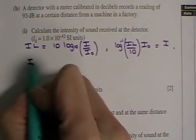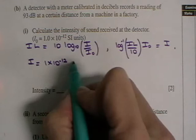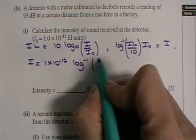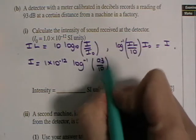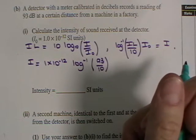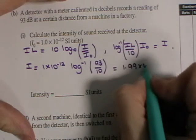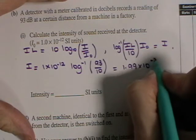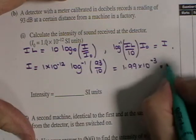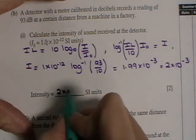So I is equal to I not, which is 1 by 10 to the minus 12, multiplied by log to the minus 1 of intensity level is 93 divided by 10. And 93 over 10, of course, is 9.3. And whenever you do that, you come out with an answer of 1.99 by 10 to the minus 3. And given that these are all in two significant figures, we'll round it up to 2.